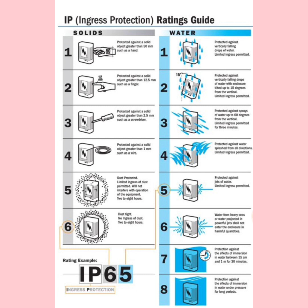For example, if you have purchased one enclosure that shows IP65 — if you look at the first number, six means it is dust tight. For the second number, five means it can withstand a jet of water without failure and without affecting the function of the equipment.